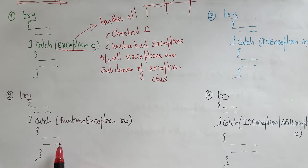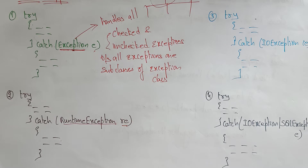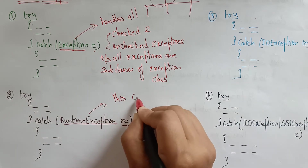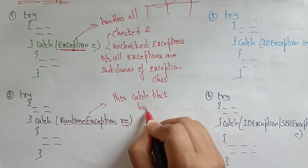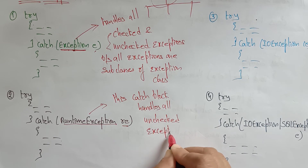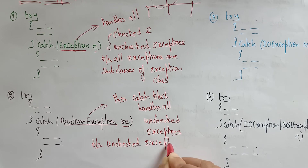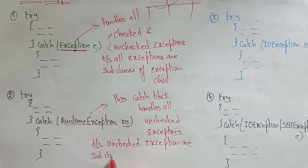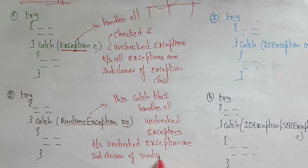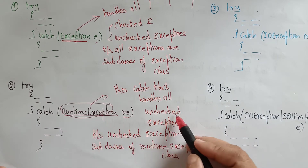In the second snippet, we have a try block and a catch block using RuntimeException with object reference RE. This catch block handles all unchecked exceptions only — not checked exceptions. Why? Because unchecked exceptions are subclasses of RuntimeException. That's why the RuntimeException class is going to handle only unchecked exceptions.